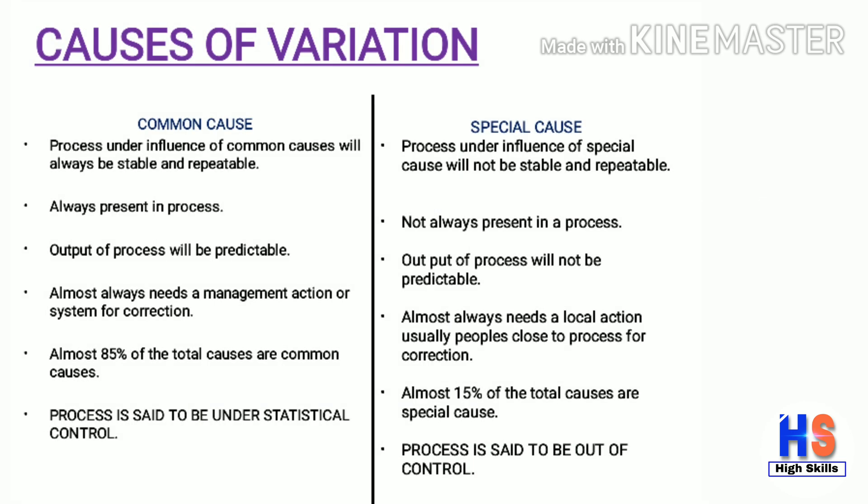There are two types of causes of variation: common cause and special cause. For common cause: a process under the influence of common cause will always be stable and repeatable. Common cause will always be present in a process. The output of the process will be predictable. Almost 85% of total causes are common causes. In common cause, the process is said to be under statistical control.